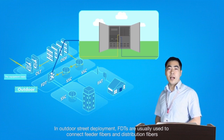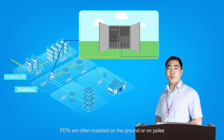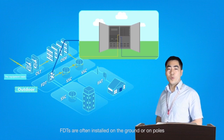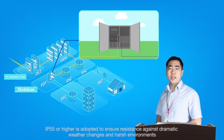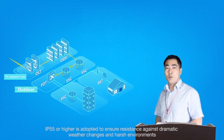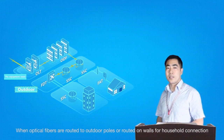In outdoor street deployment, FDTs are usually used to connect feeder fibers and distribution fibers. FDTs are often installed on the ground or on poles. IP55 or higher is adopted to ensure resistance against dramatic weather changes and harsh environments.